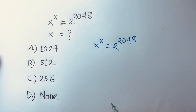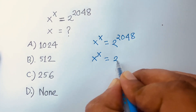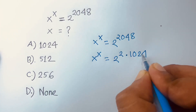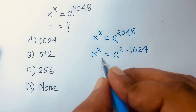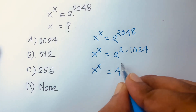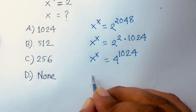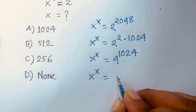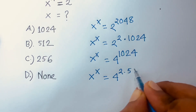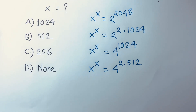I can say x to the power x is equal to 2 to the power 2 times 1024. Then I can say x to the power x is equal to 2 squared, which is 4, to the power 1024. Then I can say x to the power x is equal to 4 to the power 2 times 512 — because 2 times 512 equals 1024.